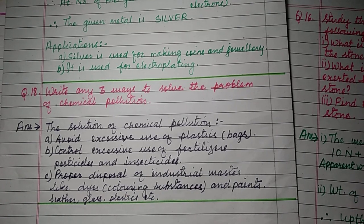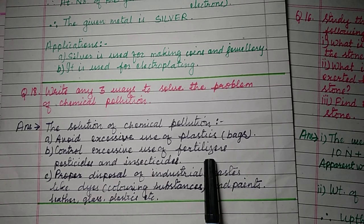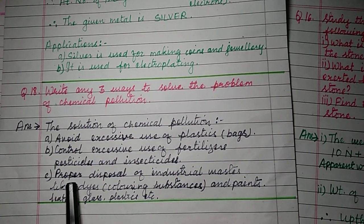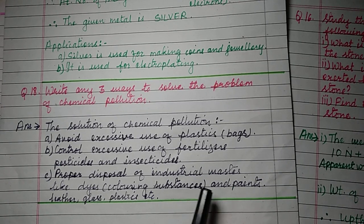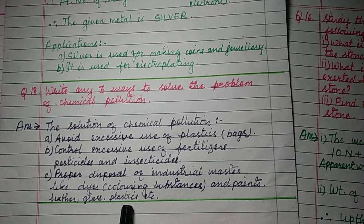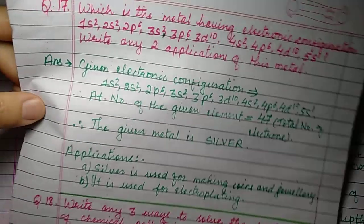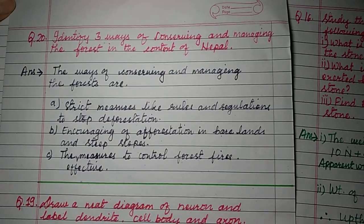If fertilizers, pesticides, and insecticides are used in moderate amounts they help get rid of pests and make soil fertile, but if used in excess these chemicals get deposited in soil and water, causing chemical pollution. (c) Proper disposal of industrial waste chemicals — such as dyes, paints, leather processing, glass industries, and plastic industries — so that chemical waste is disposed of correctly.